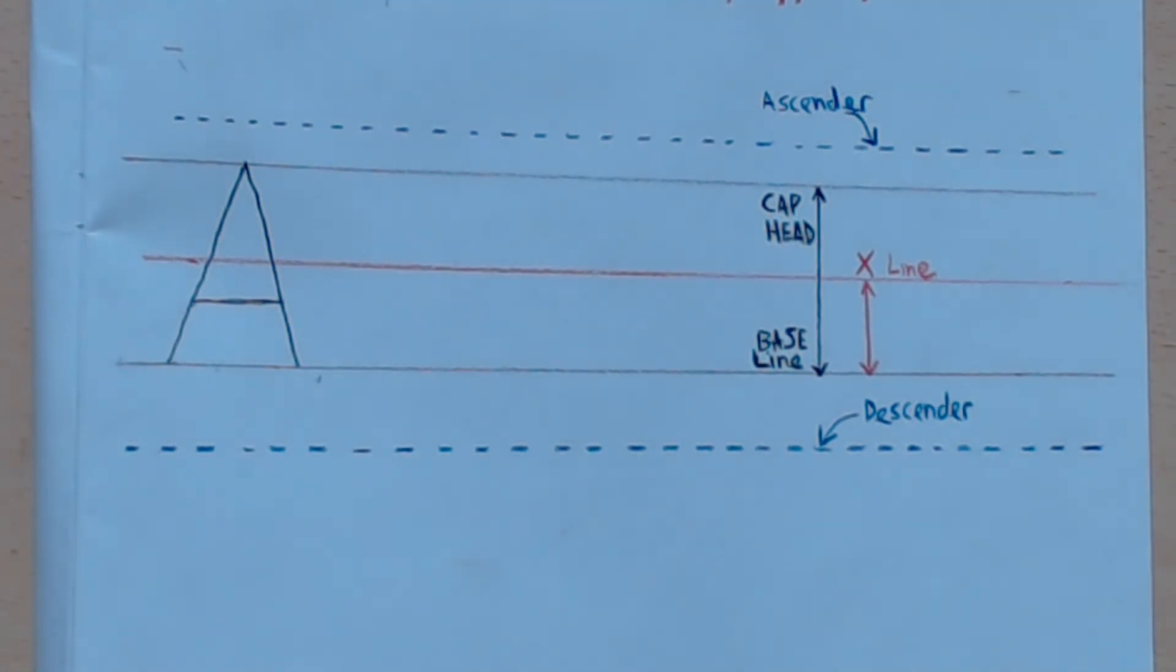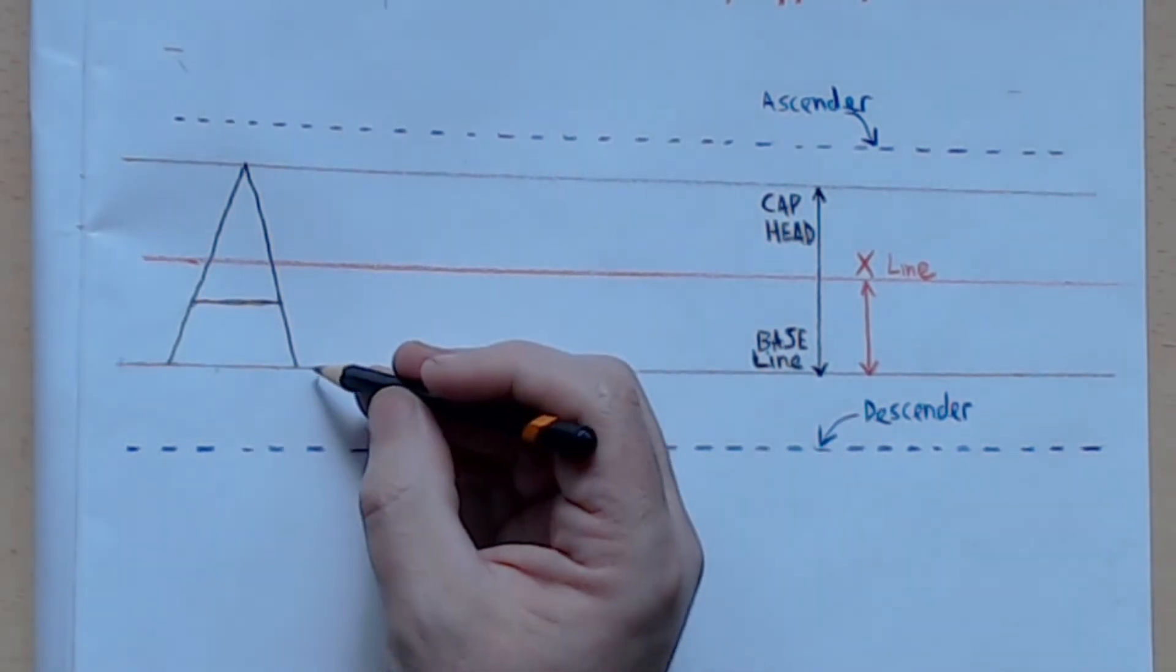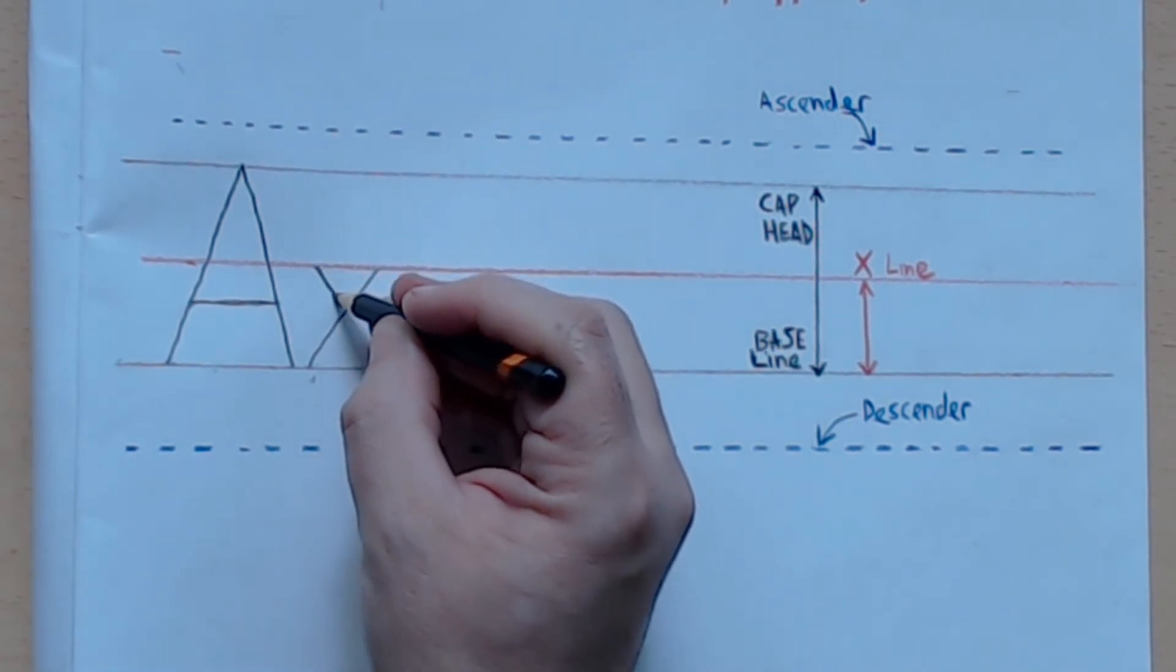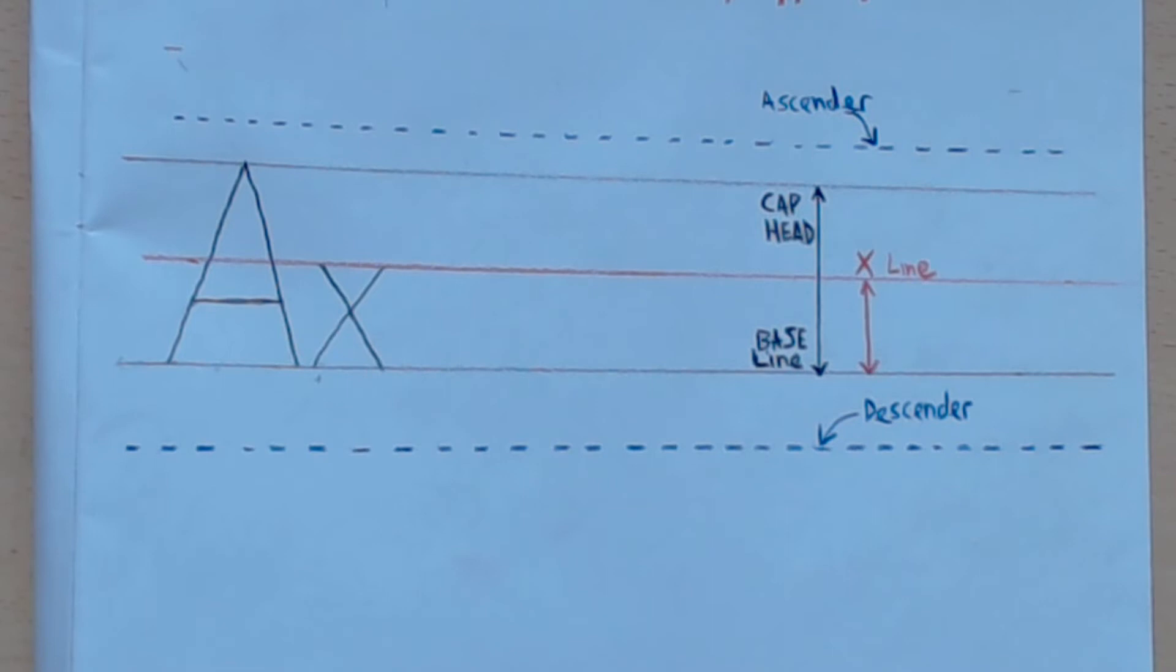When we're talking about lowercase lettering, that has an end point as well. So we see this red line here, and it's called the x-line. That's the height of an x. So we'll draw an x that represents the small lowercase lettering.